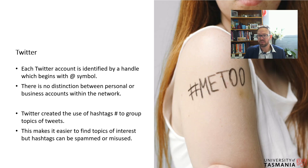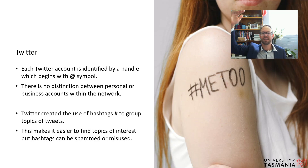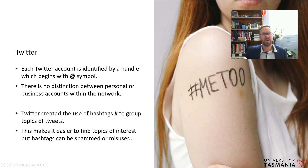Twitter created the use of hashtags — this was quite new and innovative at the time. The idea is that hashtags group topics of tweets together. A famous example was the #MeToo movement: if you wanted to see what was going on, you could search that hashtag and see all the posts people were making using it. It's a unique way of grouping content together, making it much easier to find topics of interest.